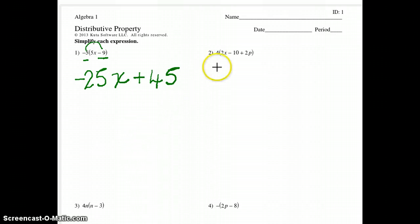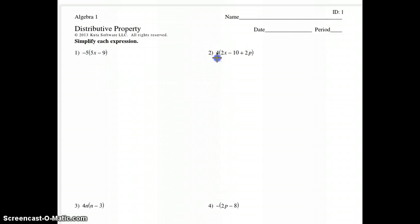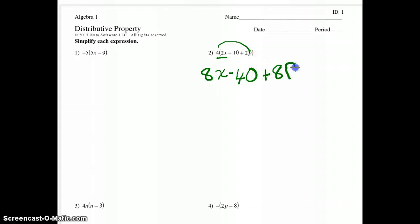Are we limited to the number of times that we can do this? Here we have a 4 times this, and a 4 times this, and a 4 times this. The parentheses say that everything inside here is being multiplied by what is outside. So in this particular case, everything is going to be 4 times bigger when we're done with it. So we have 4 times 2x is 8x, 4 times negative 10 which is negative 40, and 4 times 2p which is 8p.